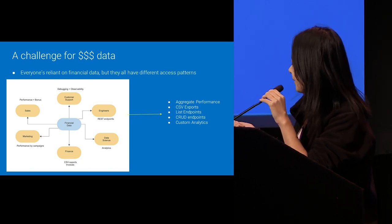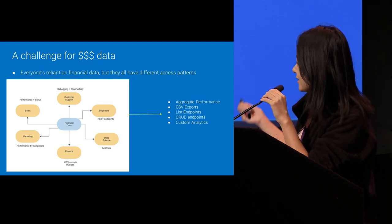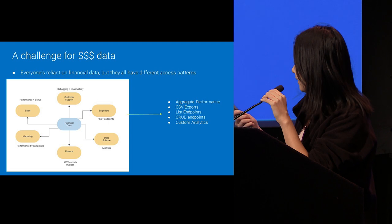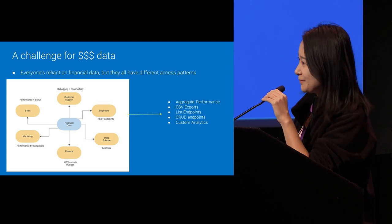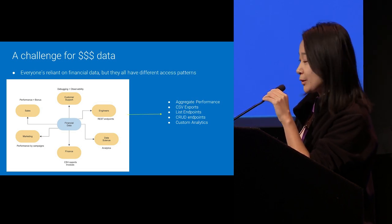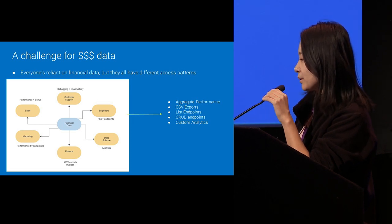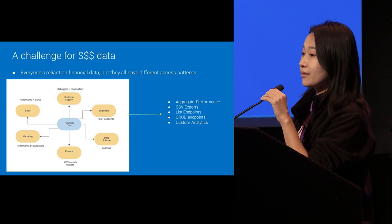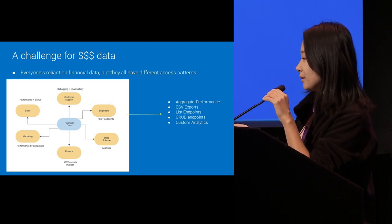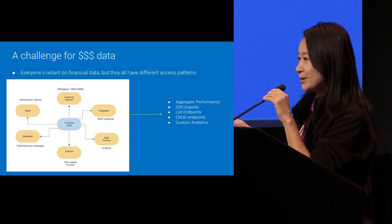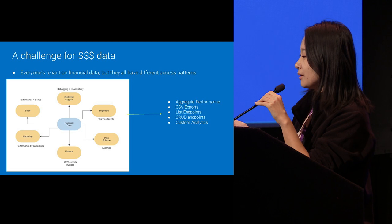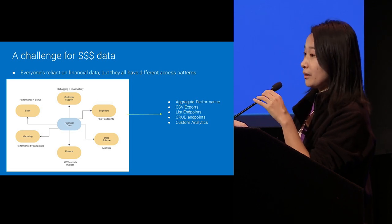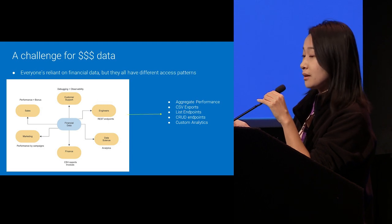I have a diagram with financial data in the middle and all the users around it. The most obvious is the finance team, who uses financial data to report to clients and back to the board on the health of the company. On the right is the sales team, whose performance is tied to how much revenue they bring in, so they have a vested interest in accurate measurement of financial performance. And marketing uses dollar metrics to track the success of their campaigns.